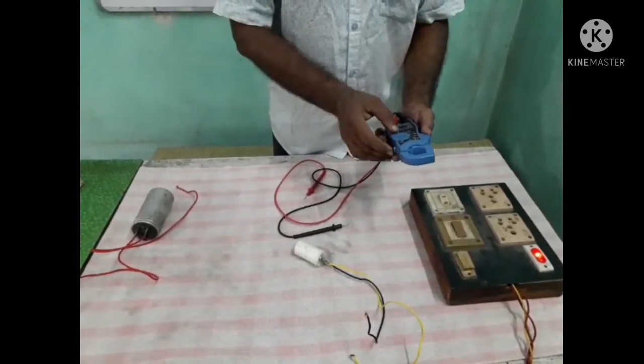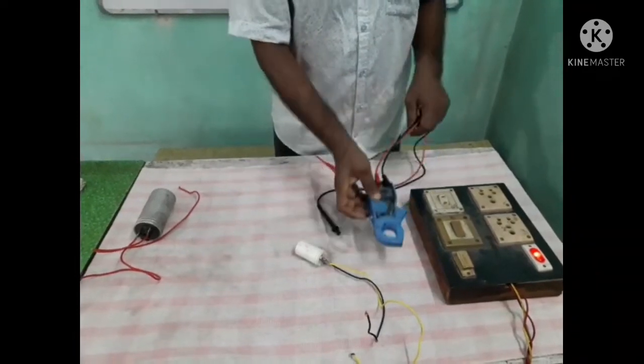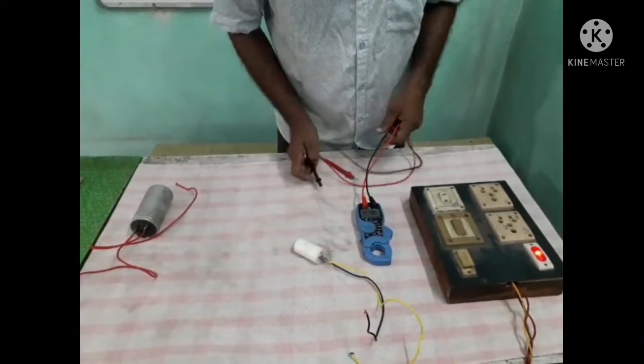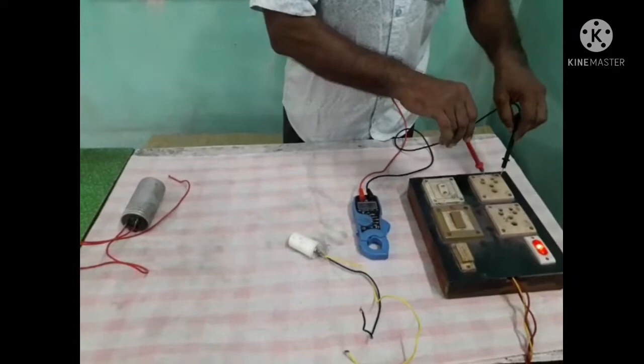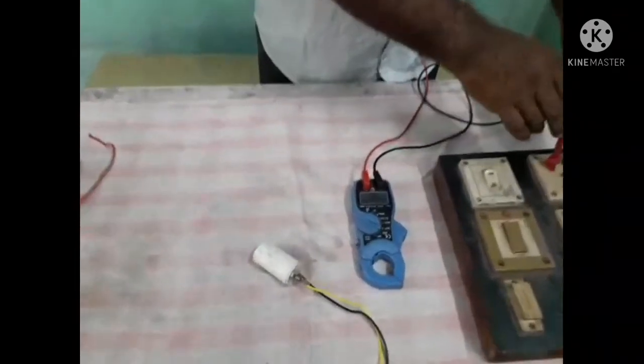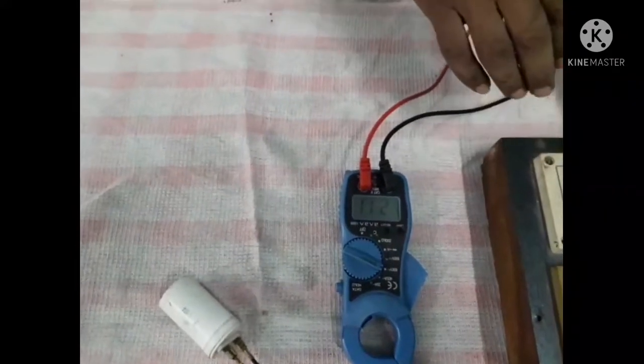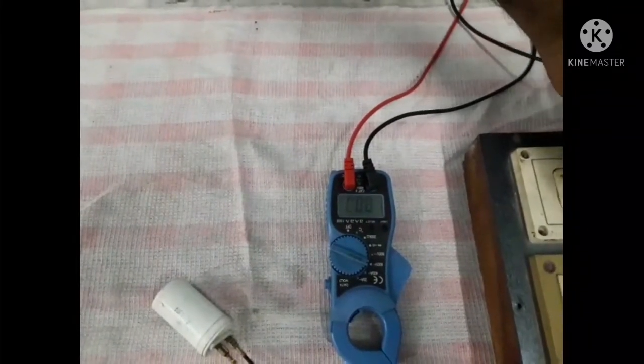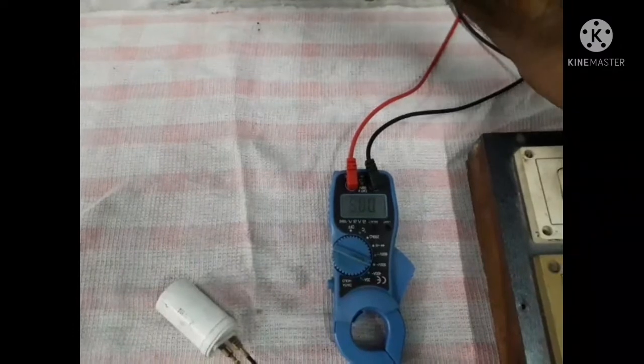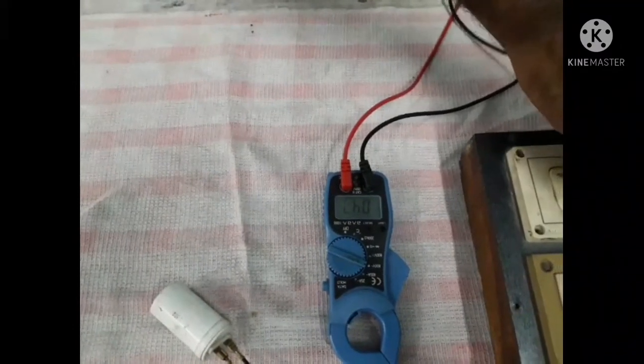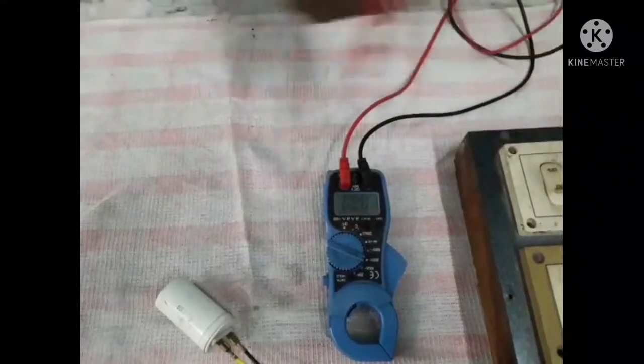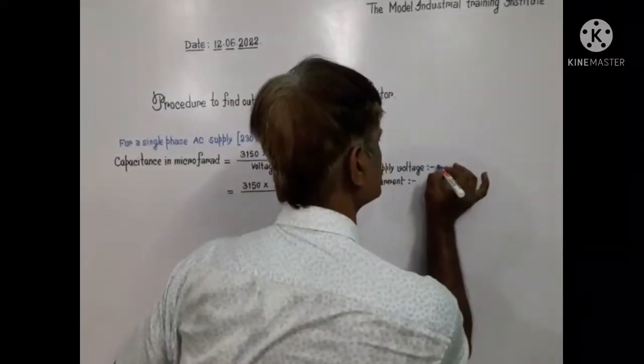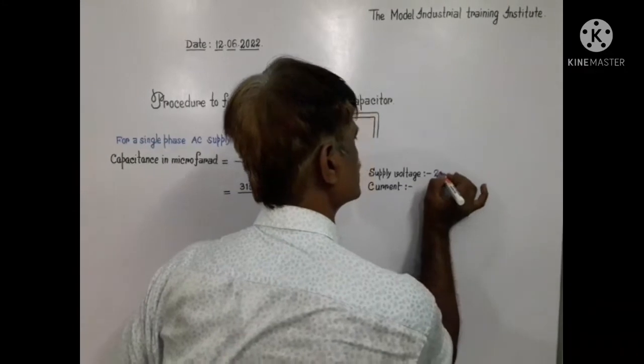So I have put it in voltage option, alternating current, and red probe to be putting phase and black probe in neutral. Switch on. It is showing 211. So voltage is 211. I am noting it down here. Supply voltage 211. Now current.